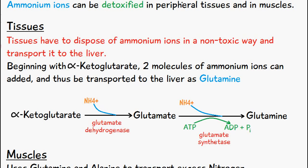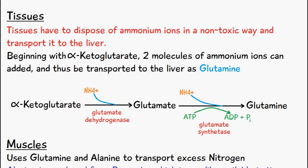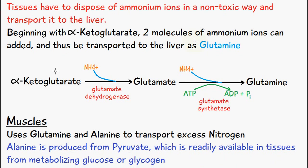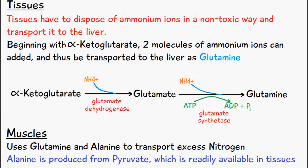Beginning with alpha-ketoglutarate, two molecules of ammonium ions can be added and those transported to the liver as glutamine. Using the enzyme glutamate dehydrogenase, NH4+ is added on to alpha-ketoglutarate to form glutamate. Then glutamate is converted into glutamine using the enzyme glutamine synthetase, which requires energy in the form of ATP. ATP is converted into ADP and inorganic phosphate, while NH4+ is added on to glutamate to form glutamine. This is what occurs in the peripheral tissues.